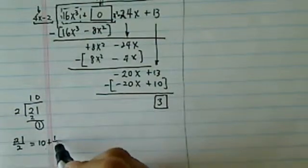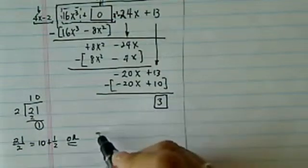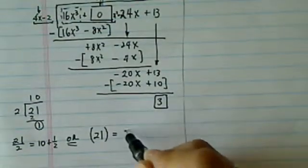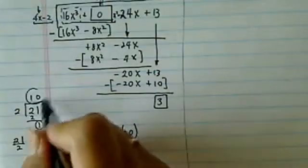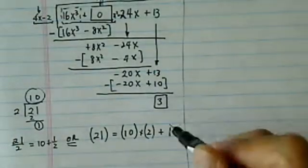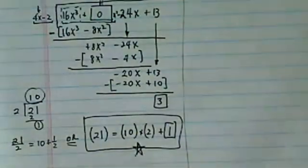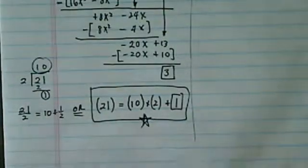What we're really saying is, look, 21 divided by 2 is equal to 10 plus a half, or equivalently you can say 21 is equal to 10—whatever this number is, 10 times 2—plus the remainder. This is actually pretty important because that's what long division is all about.